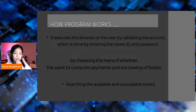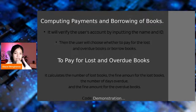How does this program work? It executes by validating the librarian or user's account, which is done by entering the name, ID, and password, then choosing from the menu whether they want to compute payments, borrow books, or search for available and unavailable books. For computing payments and borrowing, it will verify the user's account by inputting the name and ID.